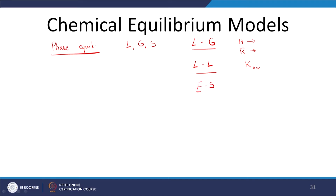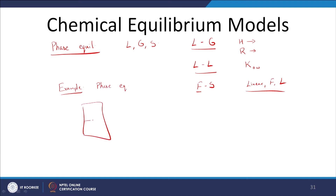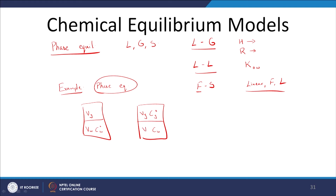Then we looked at fluid and solid partitioning — fluid being either liquid or gas. We looked at various models: linear, Freundlich, and Langmuir models. Then we looked at one particular example of phase equilibrium where we had two phases, water and gas. Initially all the compound was only in the water, and after phase equilibrium we wanted to calculate what the concentration was at equilibrium in both phases.